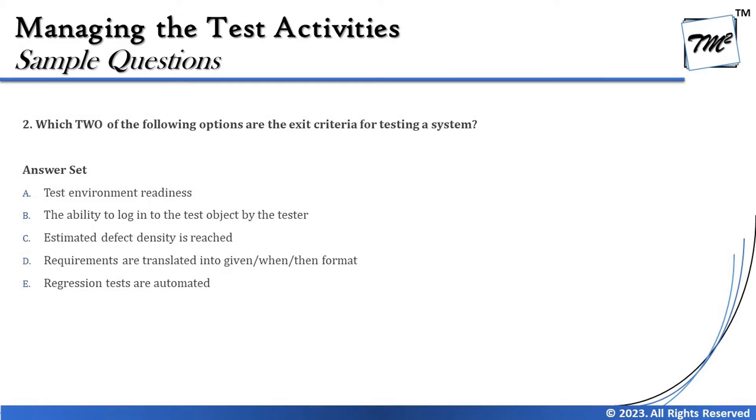Question two asks you to select two options. There may be questions with five options where you need to select two right answers. The question asks: which two of the following are exit criteria for testing a system? This type of question is generally options-driven, but the basic definition should pop up immediately — entry criteria defines when you are ready to get started, and exit criteria determines when you are done.